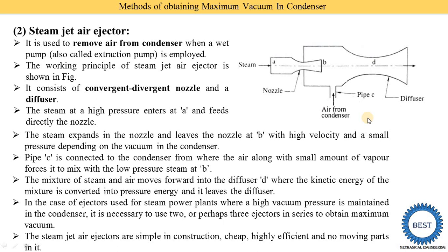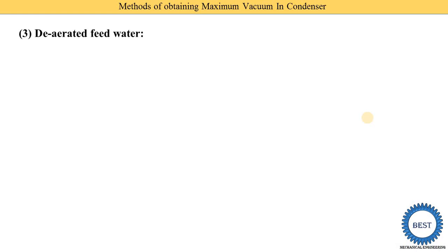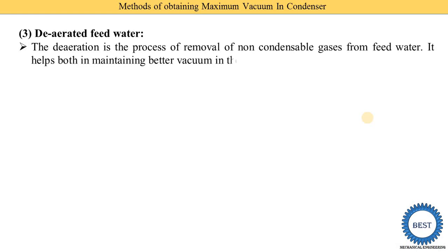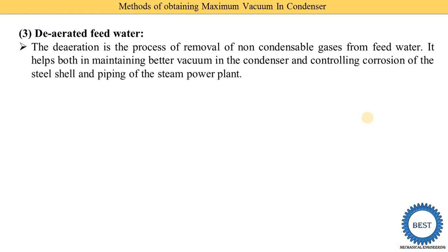The third method is deaerated feed water. Deaeration is the process of removal of non-condensable gases from the feed water. We use already-treated feed water from which the non-condensable gases have been removed before it is used in the condenser. This helps in maintaining better vacuum in the condenser and controlling the corrosion of the steel shell and piping of the steam power plant.